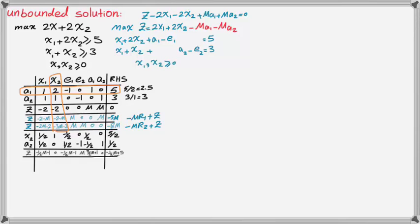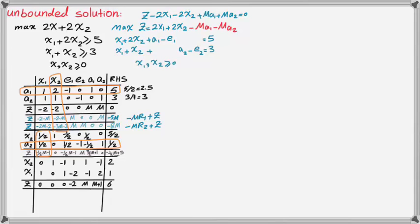Now I implement the iteration and create the next table. I have to follow the same procedure, finding the most negative value in the row of Z and implementing the minimum test. And then I iterate this table again and achieve the third iteration table.